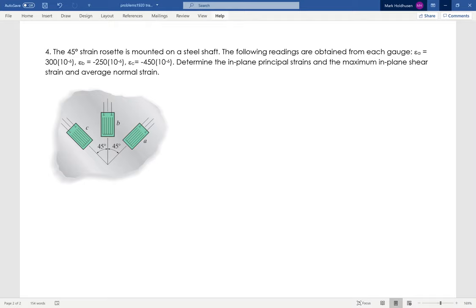What we have here is a strain rosette, a 45-45 strain rosette with three strain gauges measuring the strain in three different directions. The readings are given right there, and I want to find the principal strains and maximum in-plane shear strain.